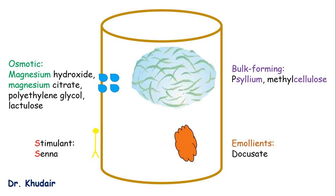Lastly, we have the stimulants, like senna. Both start with an S. They irritate the nerves in the walls of the GI tract, initiating contractions.